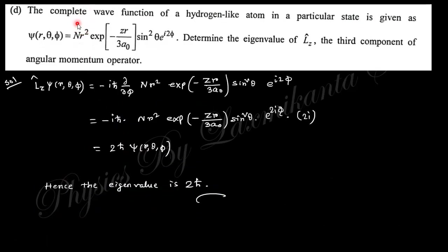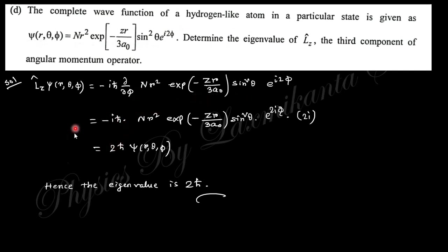Next question: given the hydrogen-like wave function, determine the eigenvalue of Lz, the third component. Applying the Lz operator to this wave function gives the eigenvalue of 2ℏ.